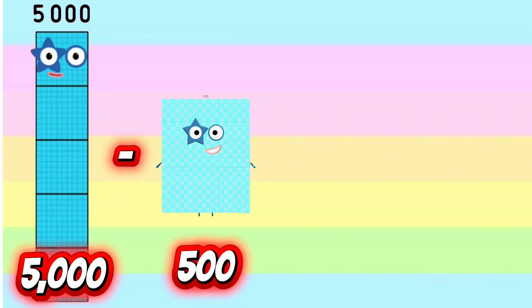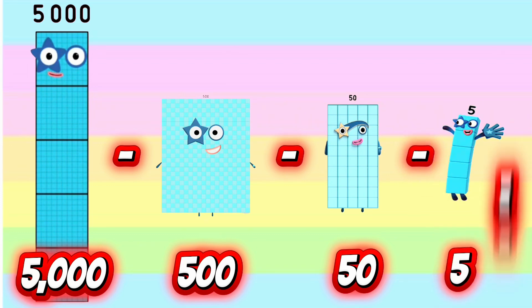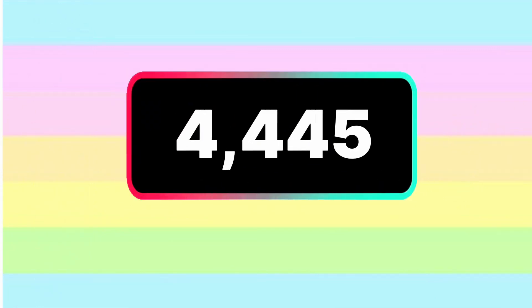5,000 minus 500 minus 50 minus 5 equals 4,445.